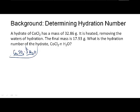Here we start with 32.86 grams of cobalt chloride hydrate, so there's some number N of water molecules attached. You heat that, and when you heat it, you essentially remove all the water. When it's done, you have 17.93 grams. We want to find out the formula of that hydrate and thereby figure out the number of water molecules per cobalt chloride.